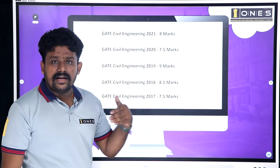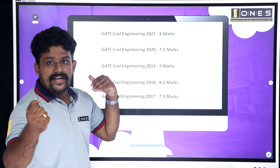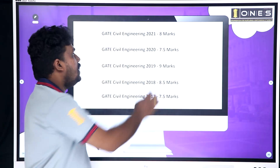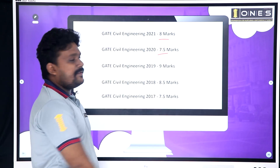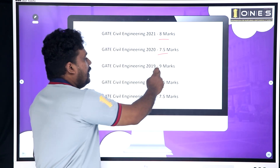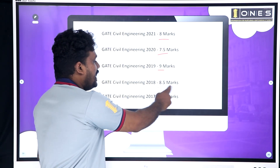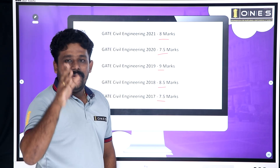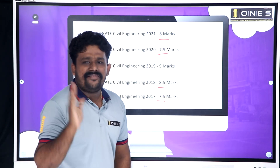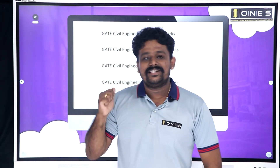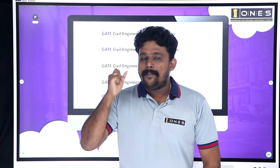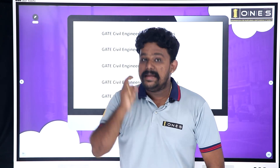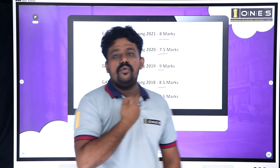For civil students similarly: in 2022 around 8 marks, in 2021 around 8 marks, in 2020 around 7.5 marks, in 2019 around 9 marks, in 2018 around 8.5 marks, and in 2017 around 7.5 marks. So fluid mechanics is a subject you should not skip — it consistently contributes significant marks.